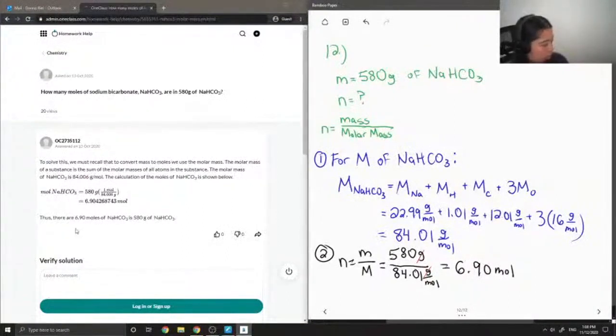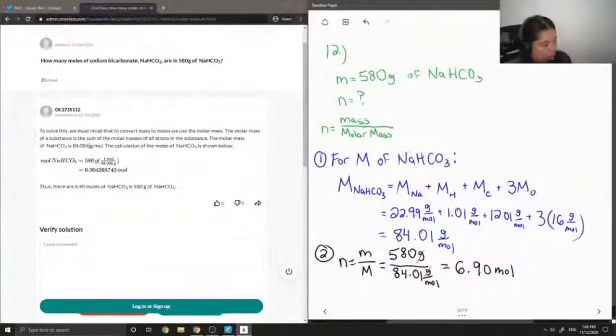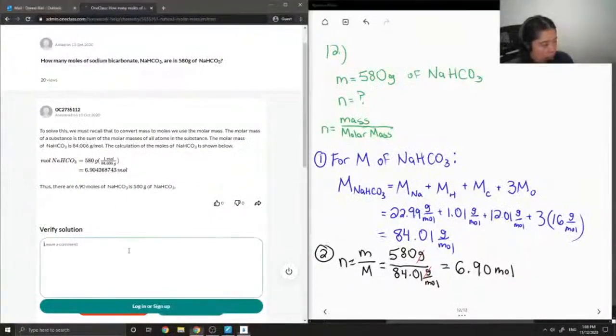Okay, so let's see what our tutor said to solve this. We must recall that to convert mass to moles we use the molar mass. The molar mass of a substance is the sum of the molar masses of all atoms in the substance. The molar mass of sodium bicarbonate is 84.006 grams per mole, and the calculation of the moles is shown below. 580 divided by 84.006 gives you 6.90.